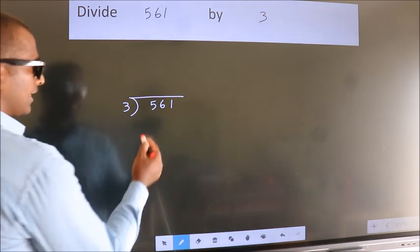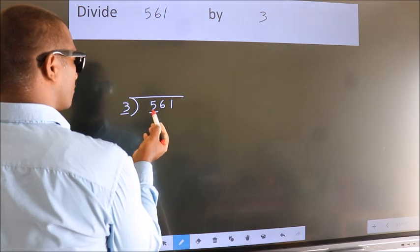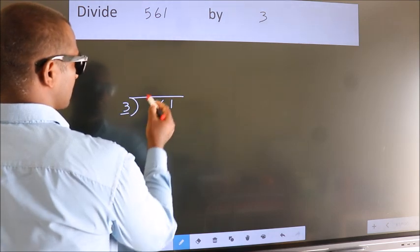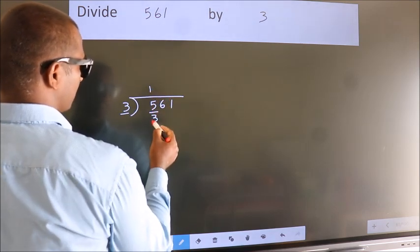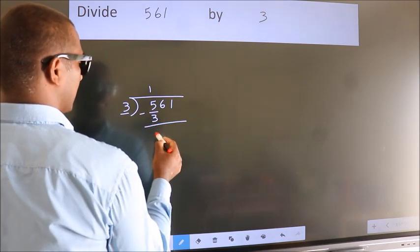Next, here we have 5, here 3. A number close to 5 in the 3 table is 3 once, which is 3. Now we should subtract. We get 2.